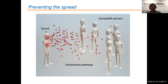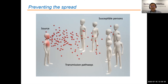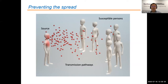If everybody were super disciplined, we would have a much lower chance of being infected. But it's not fair to require all human beings to suddenly change their behavior drastically. What we can do is come up with mitigation measures.